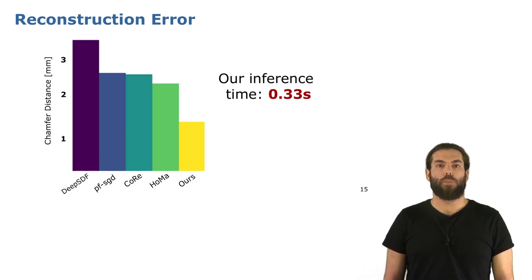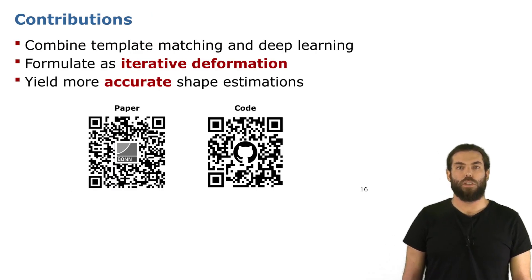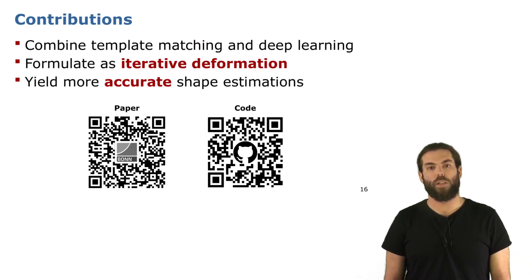So to conclude our main contribution here are the combination of a template matching with deep learning in a unified framework. This framework basically allows us to iteratively deform a template to obtain a complete 3D mesh given a partial fruit. This approach allows us to obtain more accurate shape completion results than the baselines.